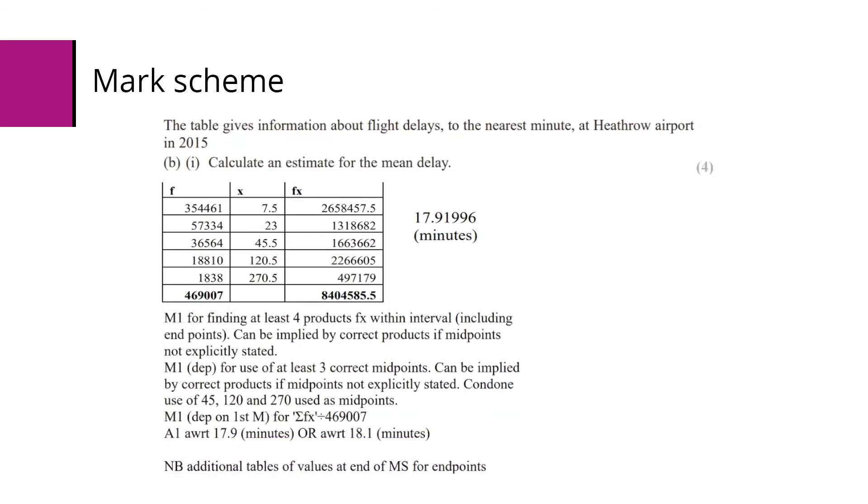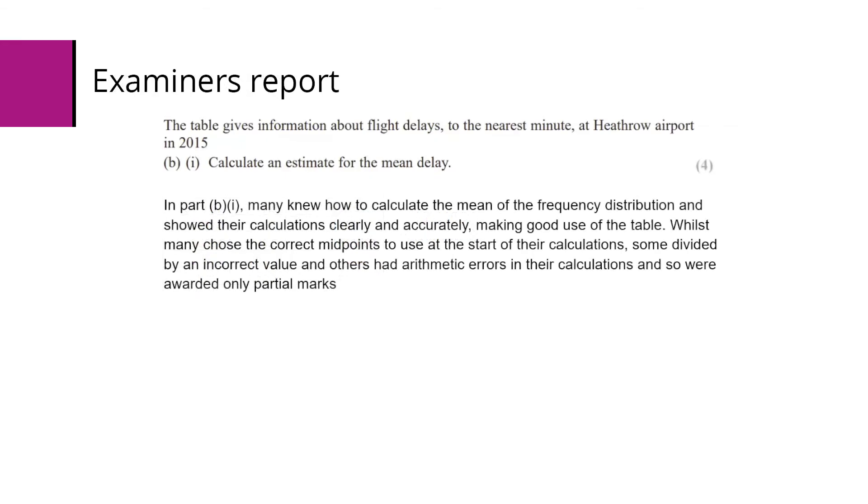Let's look at the mark scheme. It's a four mark question, so there's one mark for finding at least four products of f times the midpoint, a second method mark for using correct midpoints, a third method mark for dividing their fx by the total number of flights, and then the accuracy mark for the answer.